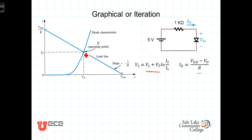So graphically we're looking for that intersection point, but analytically there's no way to reach it directly. Because of this negative feedback, an iterative process can be used that will close in on the balance point, or the bias point.